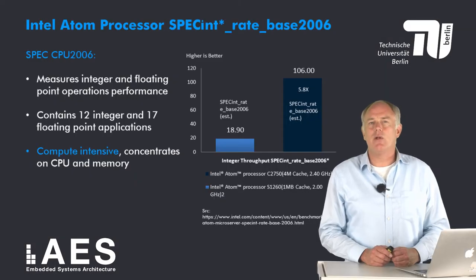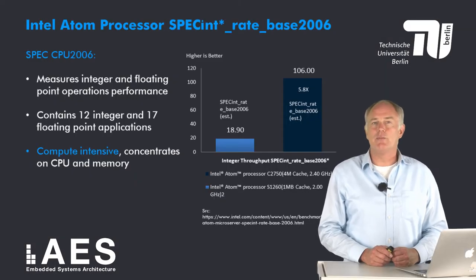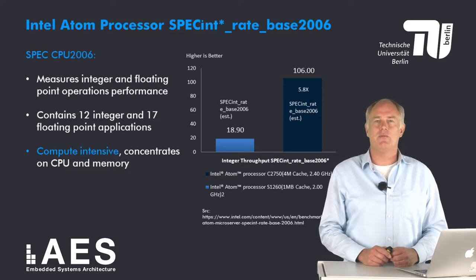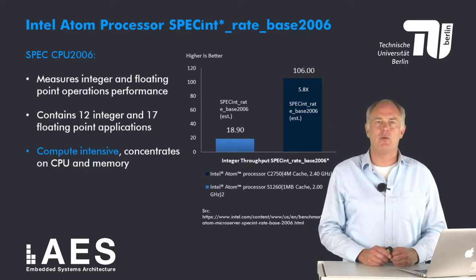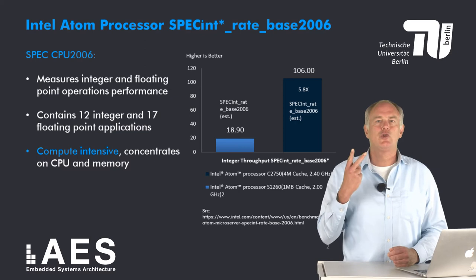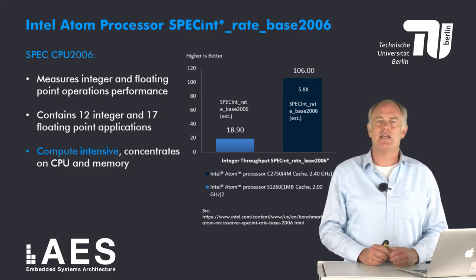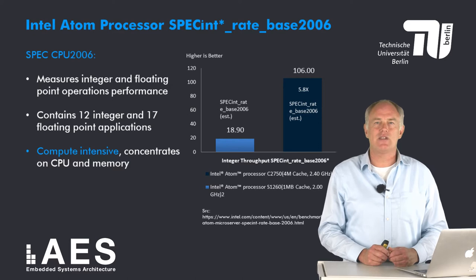To give an example of how computer performance is presented in the press, here is a figure and some text that I copied from a website of Intel. It shows the SPEC INT 2006 performance of two ATOM processors, the C2750 and the S1260.